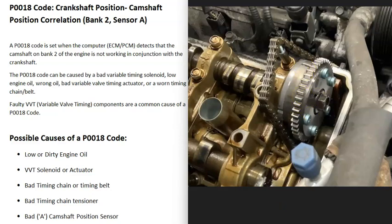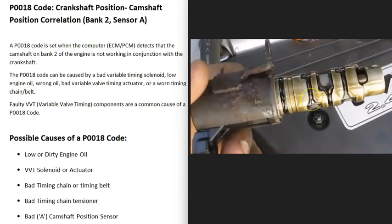Oil flows through all these variable valve timing components, and this is why dirty or low engine oil can cause this code. If the vehicle had really dirty engine oil, it can clog these parts up and cause issues. But these components can also fail and cause issues. The next thing on the list is a bad variable valve timing solenoid or actuator.